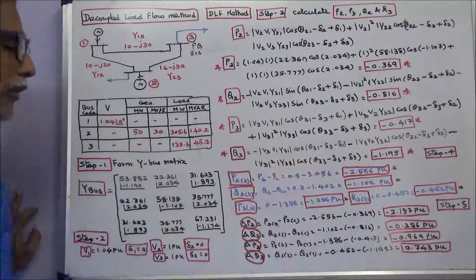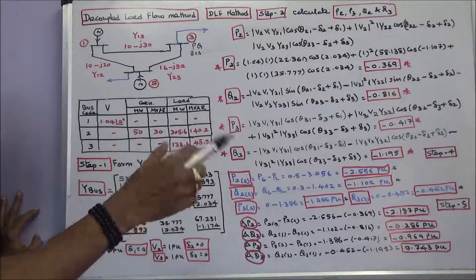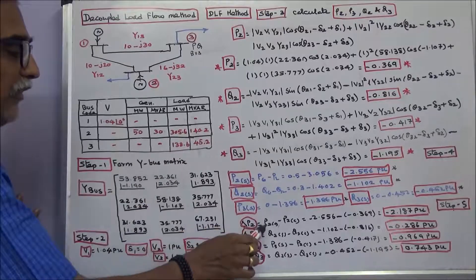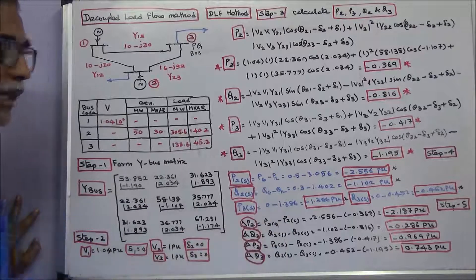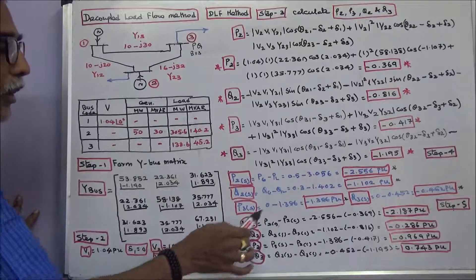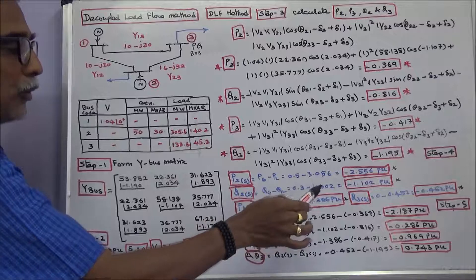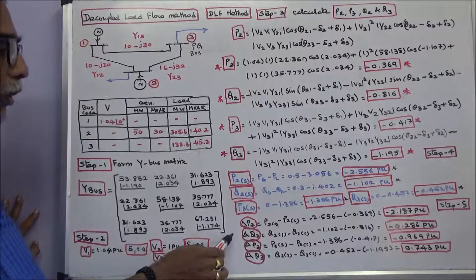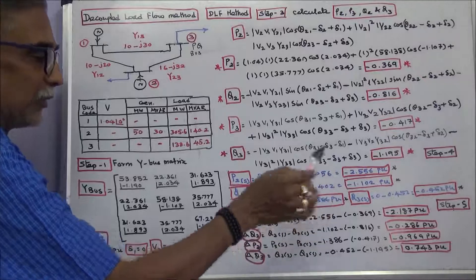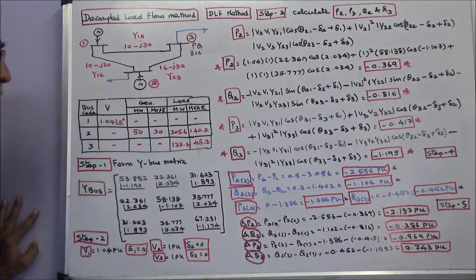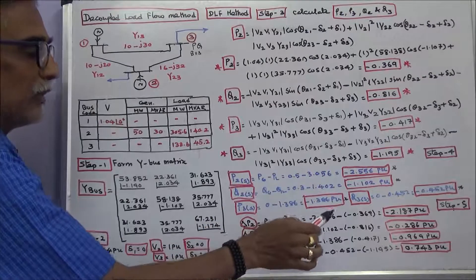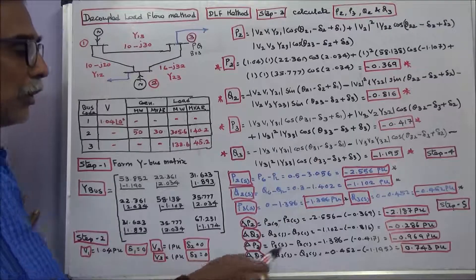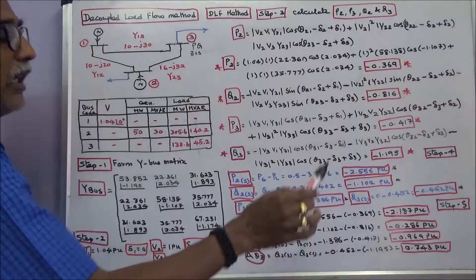Step 5: Calculate the difference in real and reactive power, i.e., specified minus calculated. Delta P2 = -2.187 per unit, Delta Q2 = -0.286 per unit, Delta P3 = -0.969 per unit, Delta Q3 = 0.743 per unit.